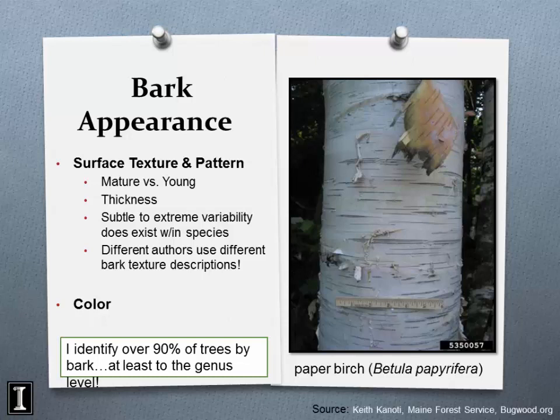There's also subtle variability based on genetics and site conditions. For example, bur oak acorns in Iowa are much smaller than in central Illinois, and in southern Illinois near the Kaskaskia River bottoms they can be the size of tennis balls. That genetic variability carries over to bark characteristics as well, though less so with buds.